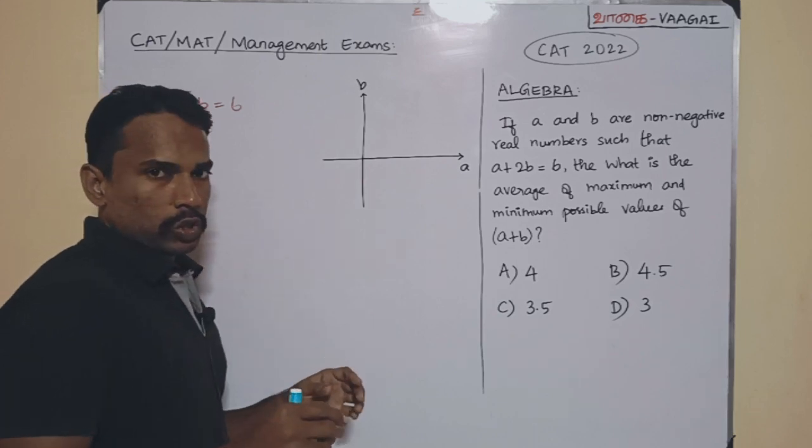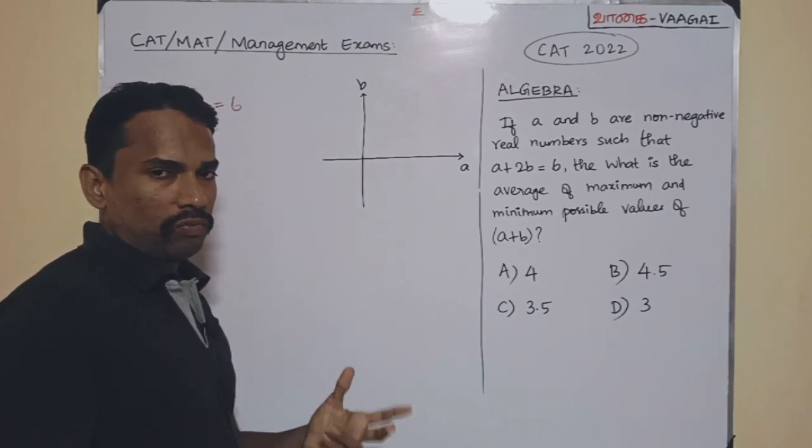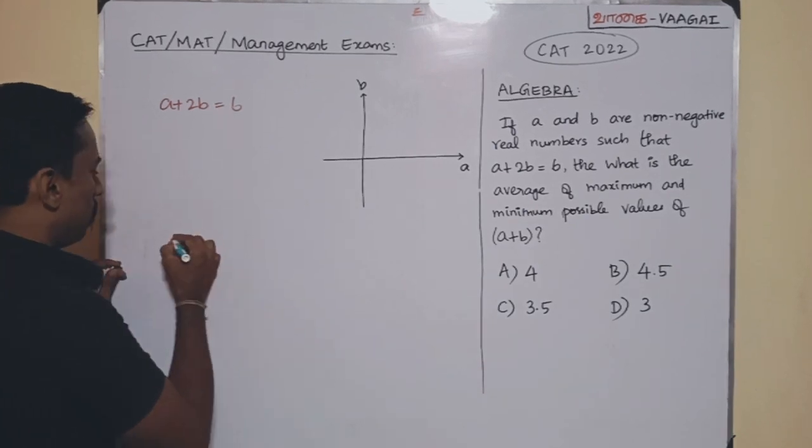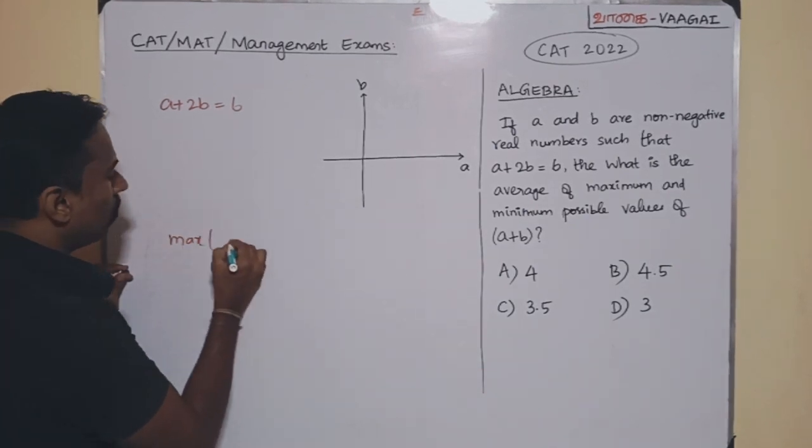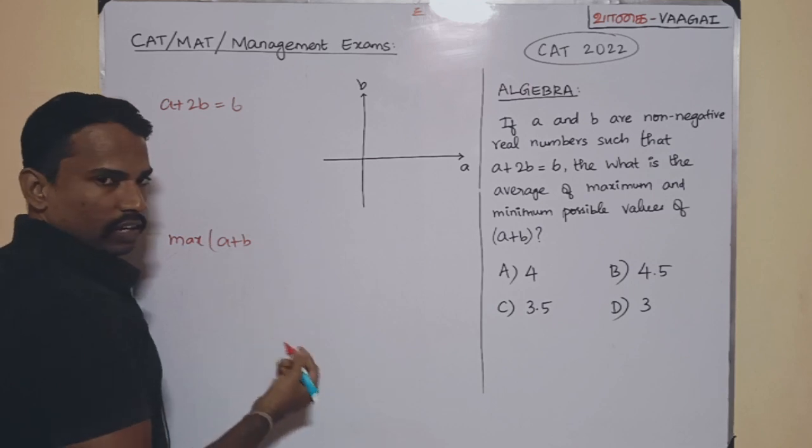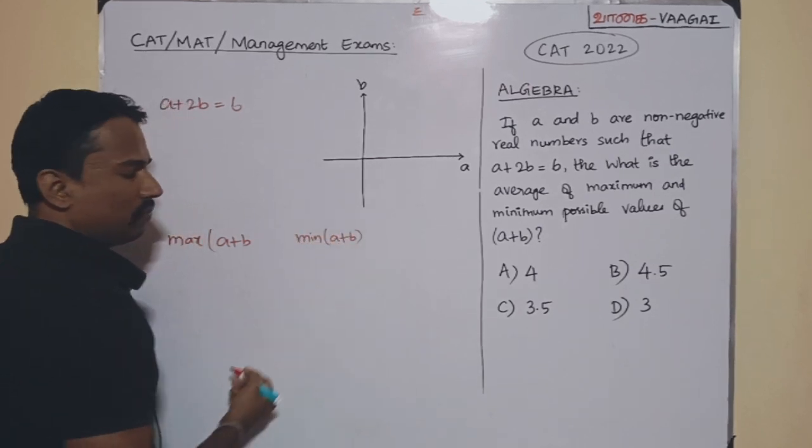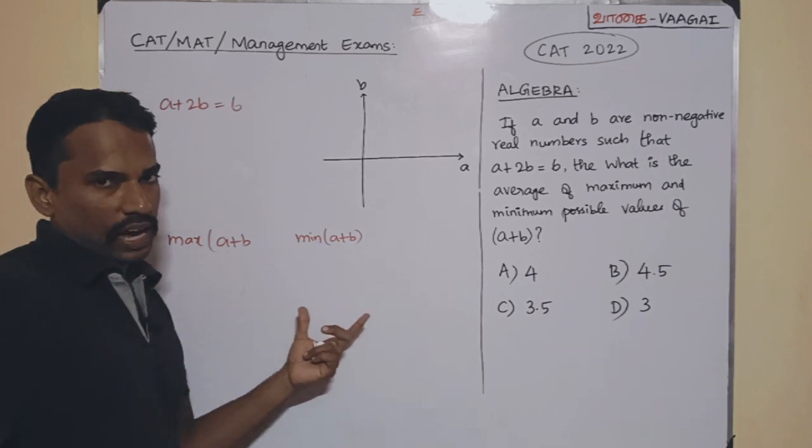So, this is going to be the question. That means we are supposed to find the average of two values. Which two values? We need to find maximum of A plus B and also we need to find the minimum of A plus B. So, for these two values is what we are supposed to find the average.